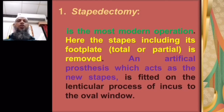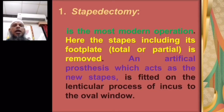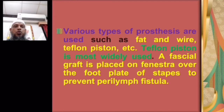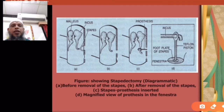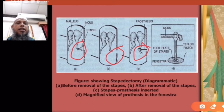Stapedectomy is the modern operation where the stapes including its footplate — total or partial — is removed, and an artificial prosthesis is fitted from the lenticular process of the incus to the oval window. Various types of prosthesis are used, such as fat, wire, and Teflon piston — Teflon piston is the most widely used. A fascial graft is placed on the fenestra over the footplate to prevent perilymph fistula.